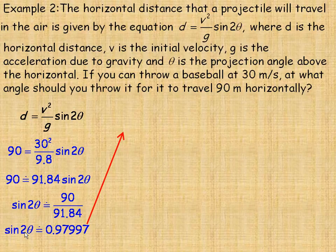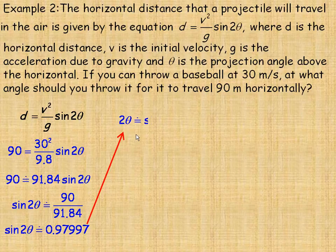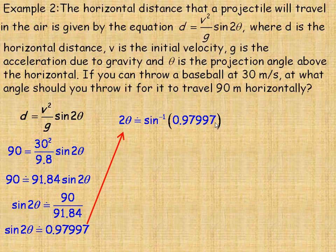Now we want to find theta, so we've got to find 2 theta first. So to find the angle, 2 theta would equal the inverse sine of 0.97997. And so we take the inverse sine of that, and 2 theta would be about 1.37 radians.